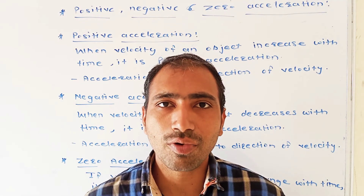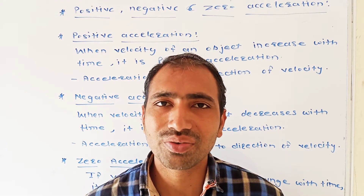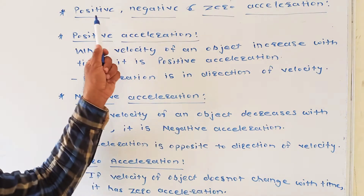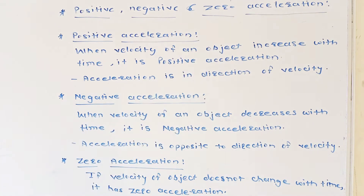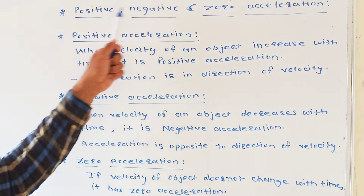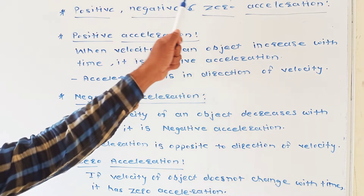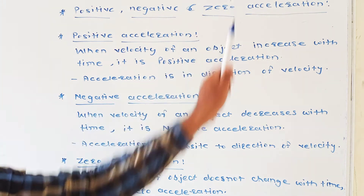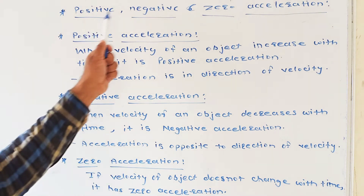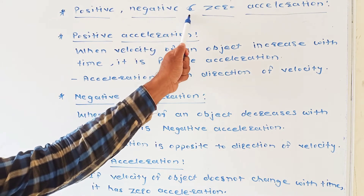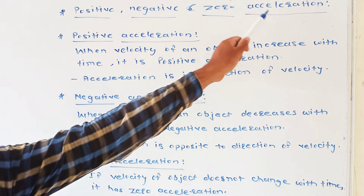Let us see the point present on page number 5 — positive, negative and zero acceleration. Today we are looking at positive, negative and zero acceleration from page number 5 of Science, Standard 9.